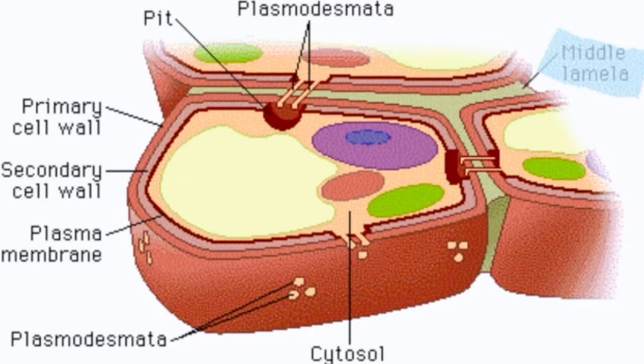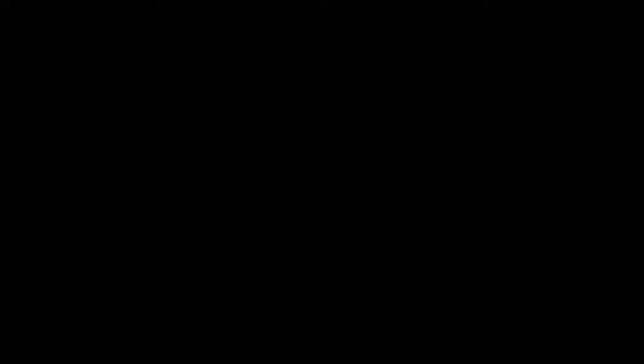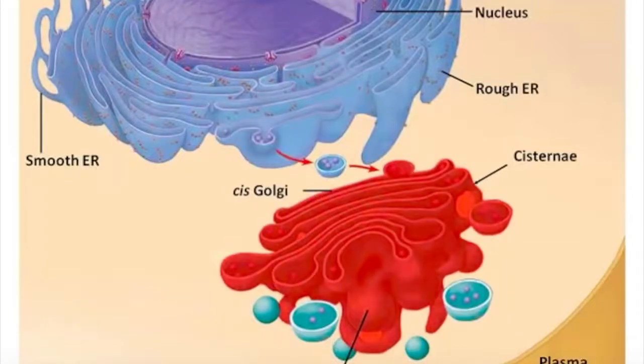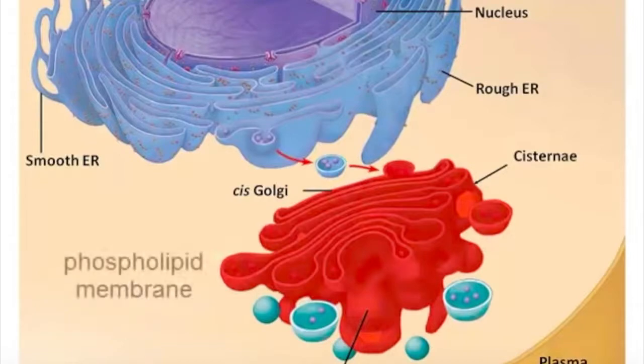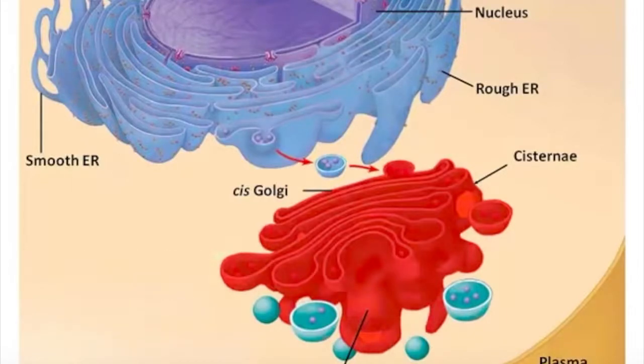Each layer has its own unique structure and function. The Golgi apparatus is an organelle present in most eukaryotic cells. It is made up of membrane-bound sacs, and is also called a Golgi body, Golgi complex, or dictyosome.